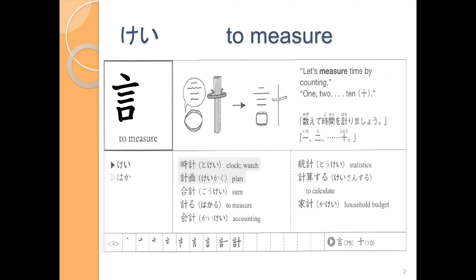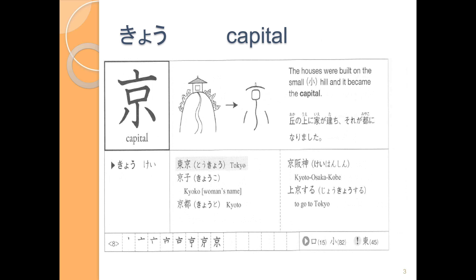Our next kanji is 京. It's used in words like とうきょう and in place names like きょうと. This kanji starts at the top with a lid-type radical, and then underneath we have くち and ちいさい. So let's write together.